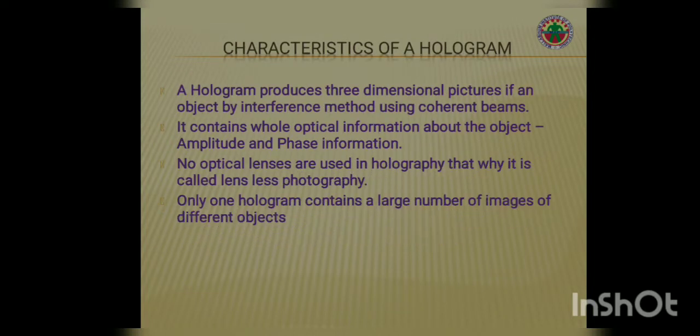What are the characteristics of a hologram? A hologram produces three-dimensional pictures of an object by interference method using coherent beams. It contains whole optical information about the object — amplitude and phase information. No optical lenses are used in holography, that's why it is called lensless holography. Only one hologram can contain a large number of images of different objects.